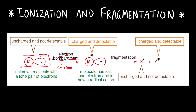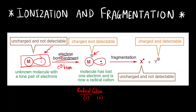The first step is electron bombardment — that is the incident electron beam. As soon as the electron beam hits the molecule, ionization takes place: one electron is lost. Whenever an electron is removed, we get a positive charge, so we get a species with a positive charge as well as a single electron. A single electron means it is a radical, and a positive charge means it is a cation — so this species is called a radical cation.